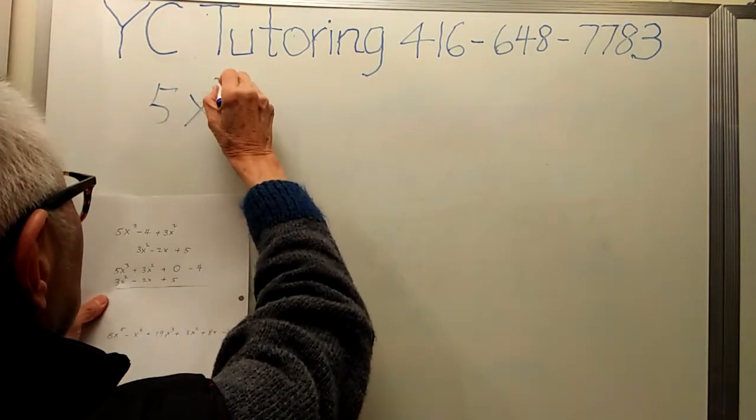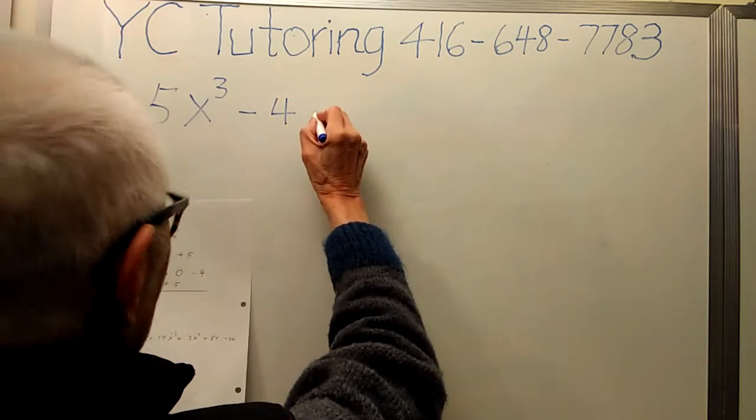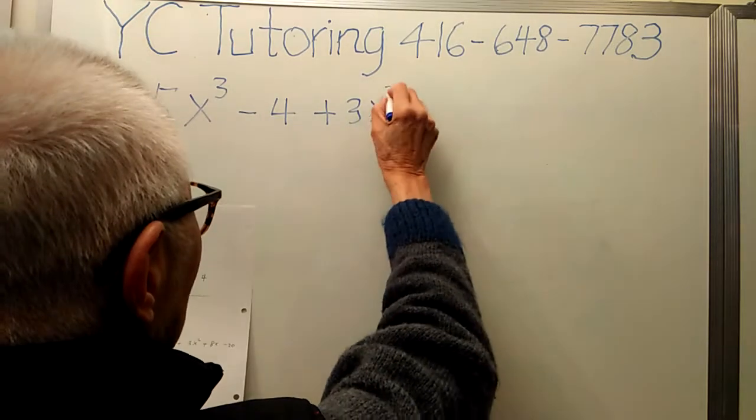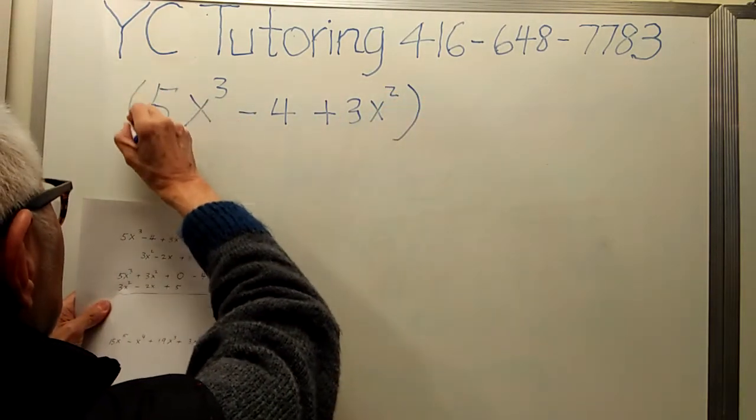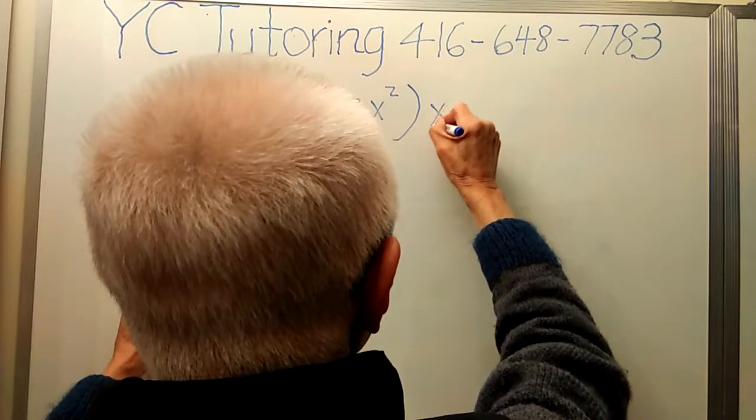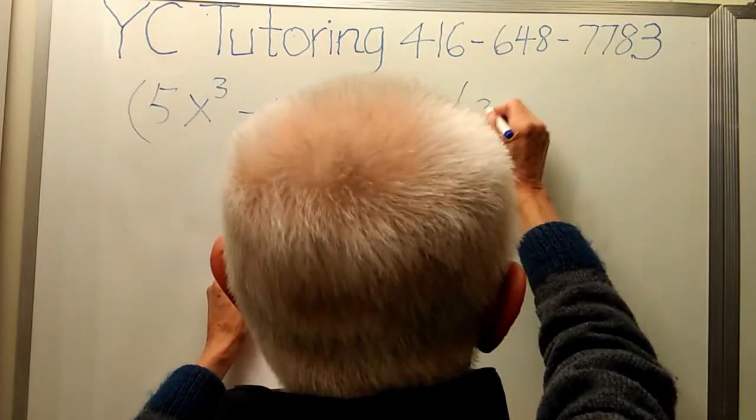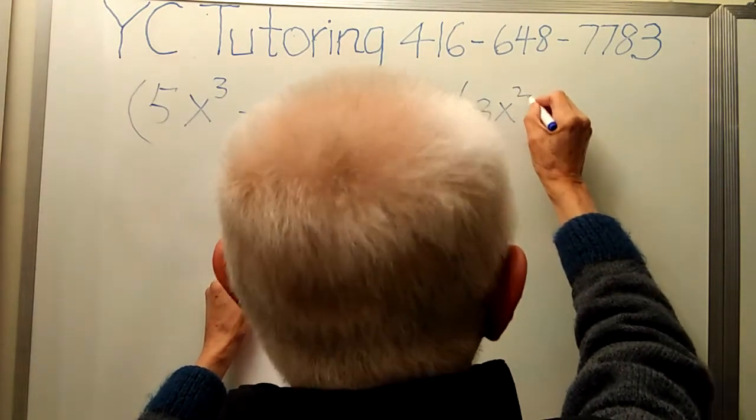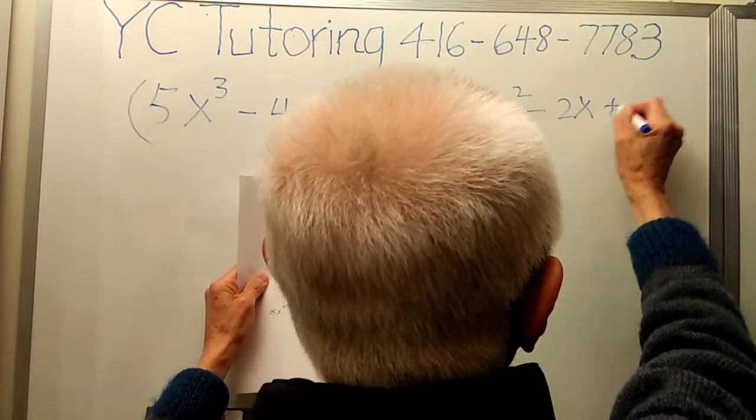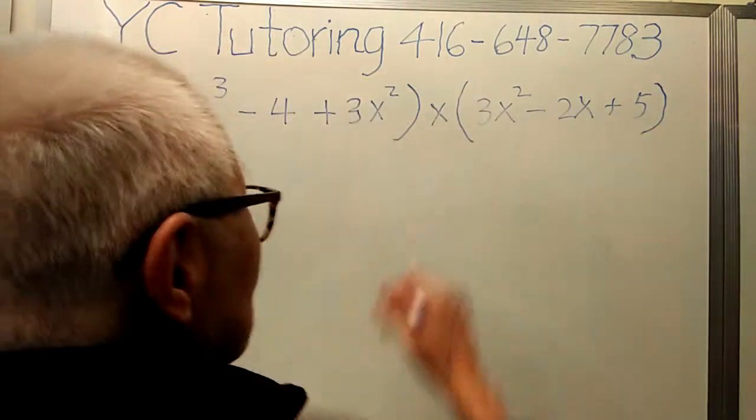We have 5x³ - 4 + 3x². This polynomial multiplies 3x² - 2x + 5. Okay, we multiply these two polynomials.